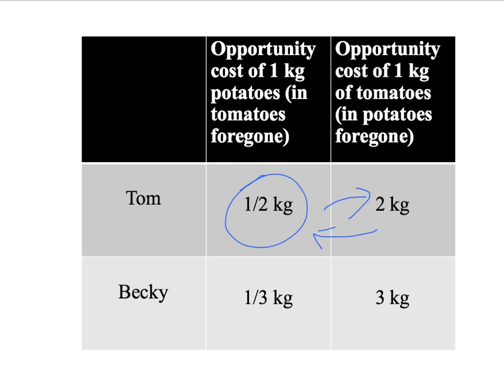Notice that while in our example Becky has an absolute advantage in everything, Tom actually has a comparative advantage in tomatoes. His opportunity cost of tomato production is two kilograms of potatoes forgone, whereas Becky's was three. And Becky has a comparative advantage in potato production — her opportunity cost of one kilogram of potatoes is a third of a kilogram of tomatoes forgone.